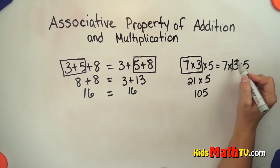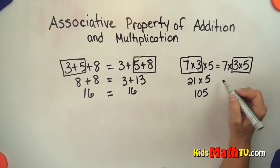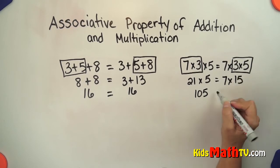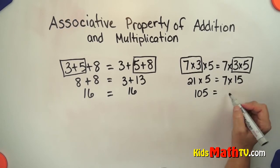Or we can group this 3 and the 5 together, 7 times, 3 times 5 is 15 and when you multiply 7 times 15 it is 105.